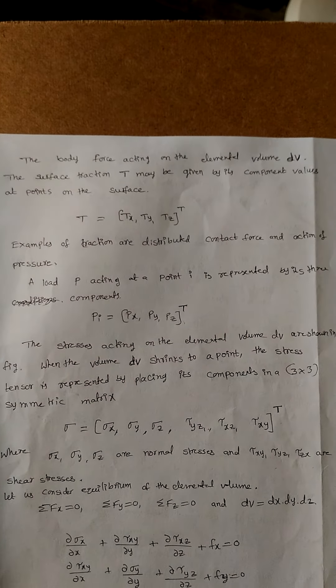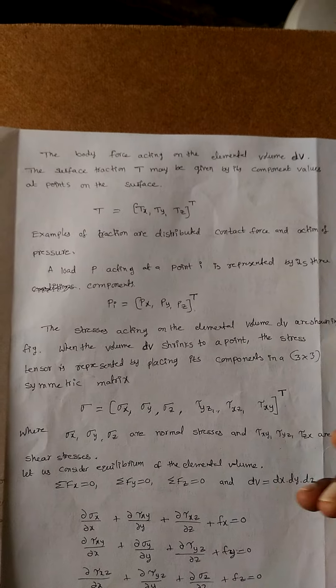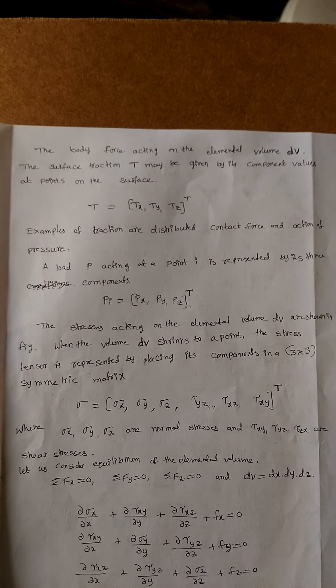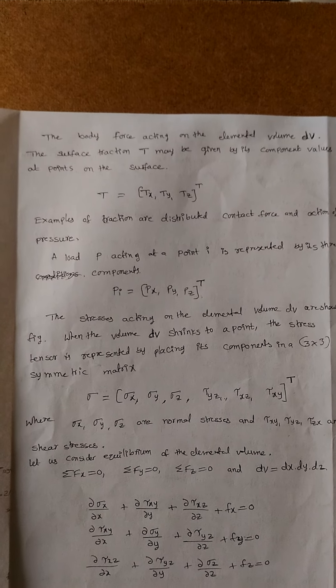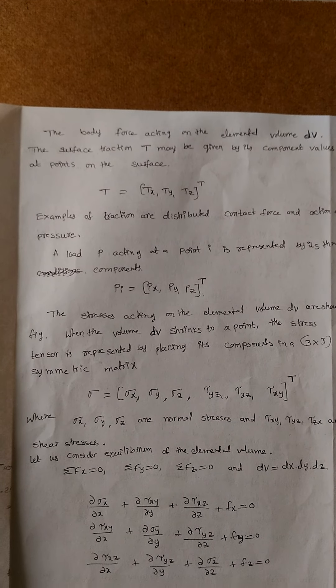The surface traction t may be given by its component values at a point on the surface: t = (t_x, t_y, t_z)^T. As an example of traction or distributed contact force, a load P is acting at a point.